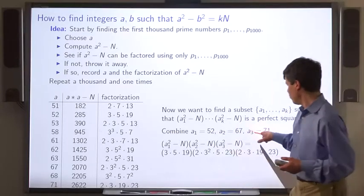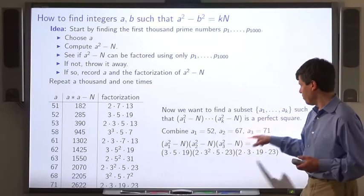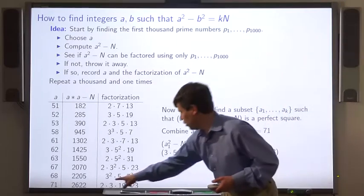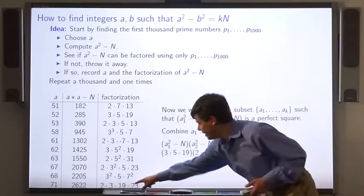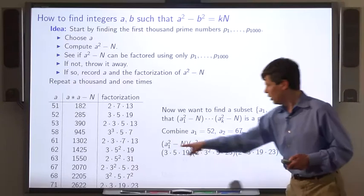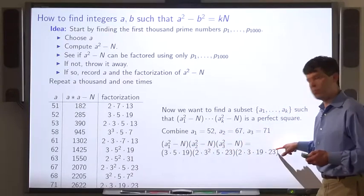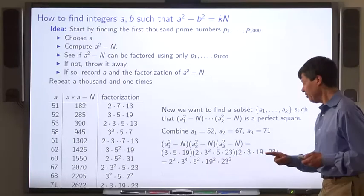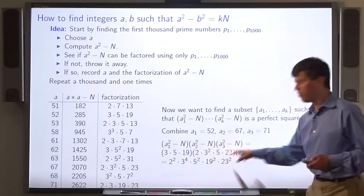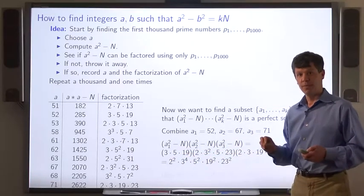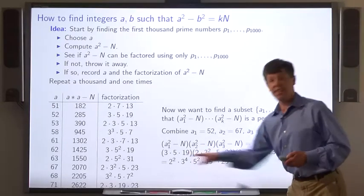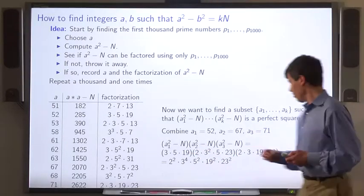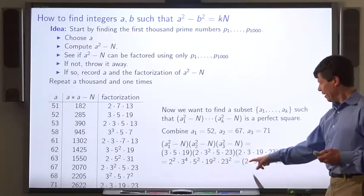And we know the factorization of a3 squared minus n, that's 2 times 3 times 19 times 23. So we multiply all these primes together and this is the number we get. You notice anything interesting here? All the exponents are even. What that means is that this number is a perfect square. Here's the square root.